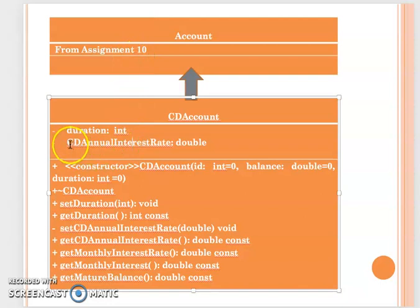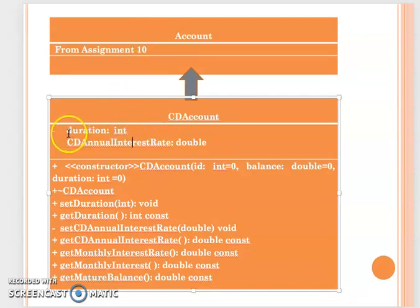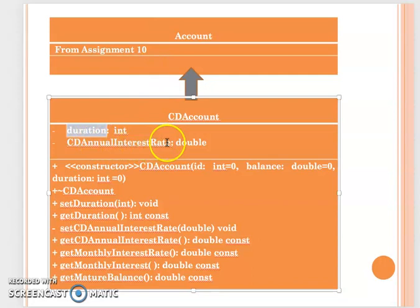Every three months of CD account duration, the interest rate increases by an additional half percent on top of the base annual interest rate. For example, if the annual interest rate in the account class equals three percent — remember that is the static variable — and you open a CD account saved for three months, you get an additional half percent, so the CD annual interest rate becomes 3.5 percent.